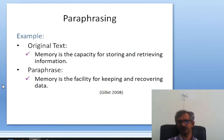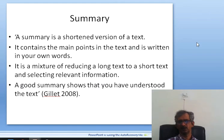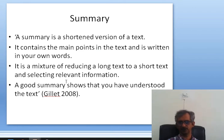The third technique is the summary. A summary is a shortened version of a text — when we review an article of 50, 20, or 10 pages, the summary is the shortest version of that material. It contains the main points in your own words and is a mixture of reducing a long text to a short text and selecting only the relevant information.